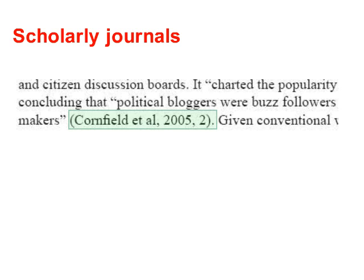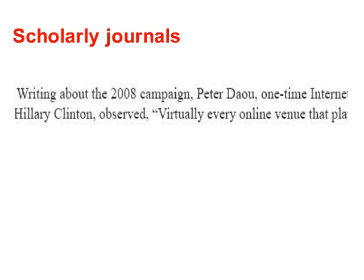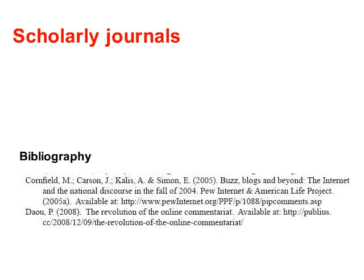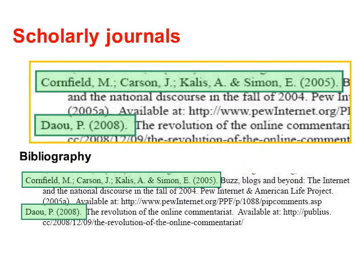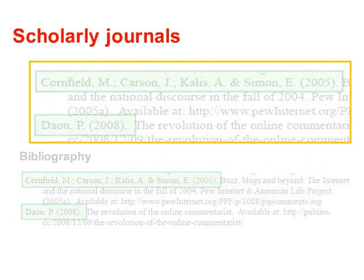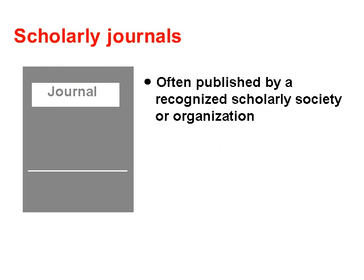they will include citations to the original sources. This is done by including in-text citations throughout the article and by including a complete citation to the original source in the article's bibliography, also known as a reference list. And scholarly journals are often published by a recognized scholarly society or organization.